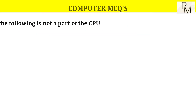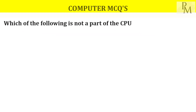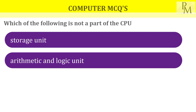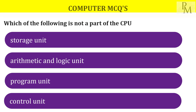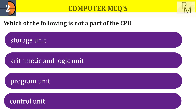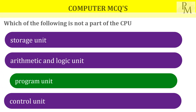Which of the following is not a part of the CPU? The options are storage unit, arithmetic logic unit, program unit, and control unit. Read carefully. The answer is program unit — it is not part of the CPU.